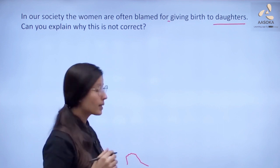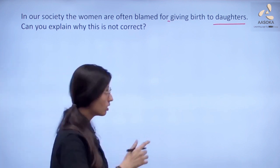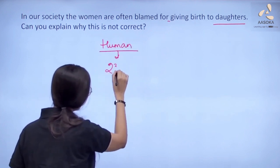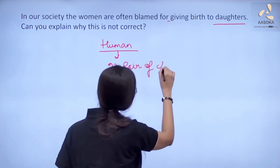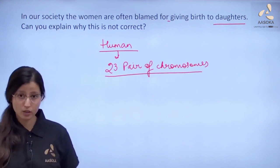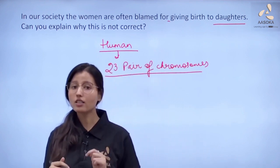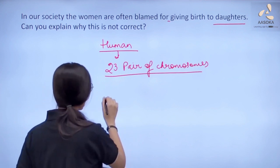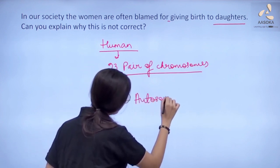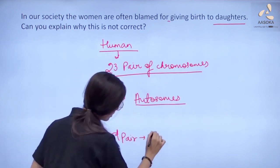The answer is: as we know, in human beings there are 23 pairs of chromosomes. Out of these 23 pairs of chromosomes in every cell, 22 pairs are the autosomes and the last 23rd pair is of sex chromosomes.